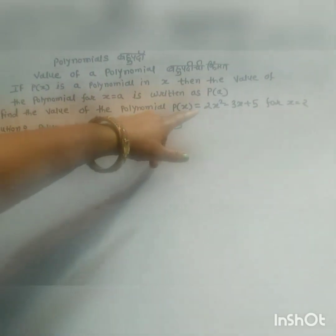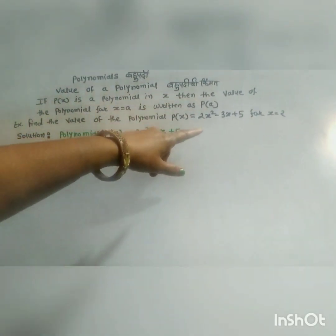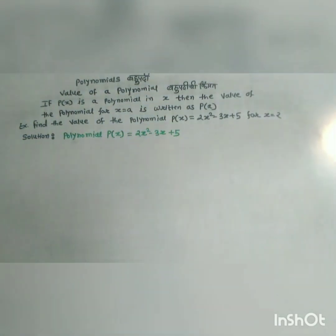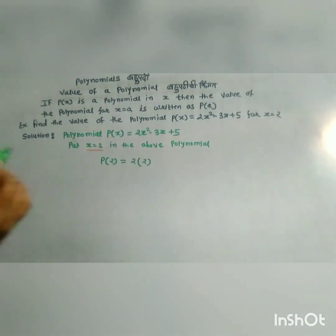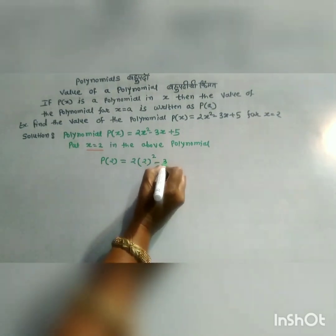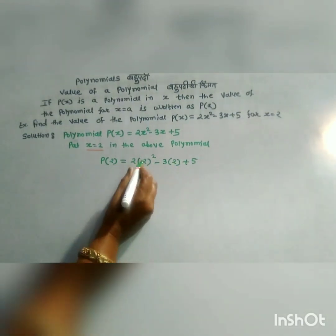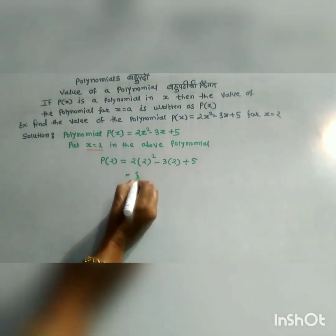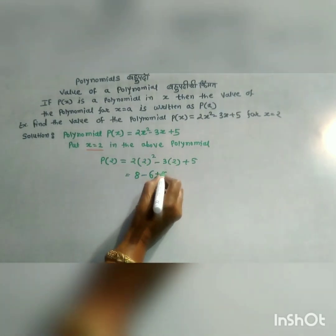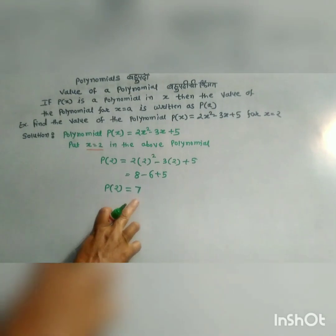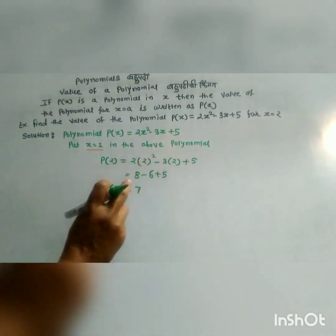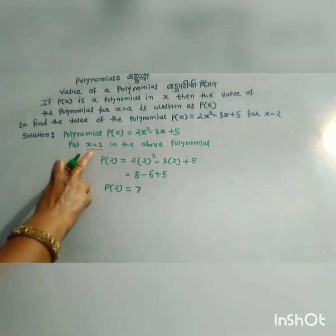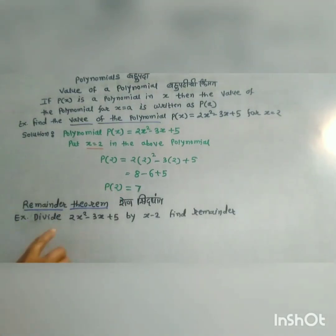Find the value of polynomial p(x) equals 2x squared minus 3x plus 5 for x equals 2. Substituting: 2 times 2 squared minus 3 times 2 plus 5 equals 2 times 4 minus 6 plus 5 equals 8 minus 6 plus 5 equals 7. Therefore the value of the polynomial p(x) equals 2x squared minus 3x plus 5 is 7 when x equals 2.